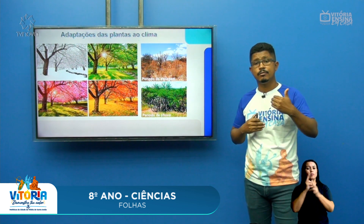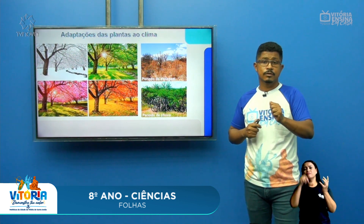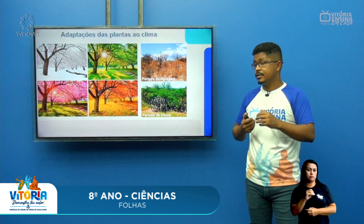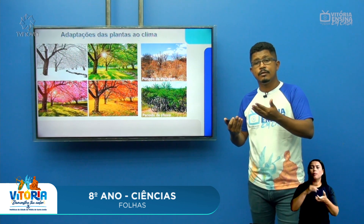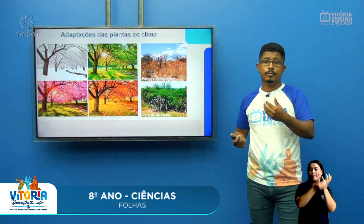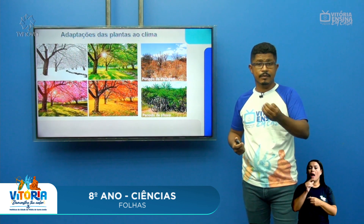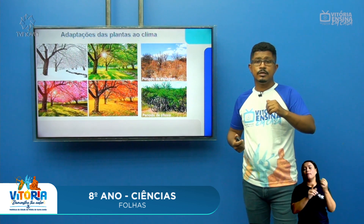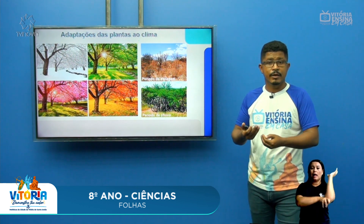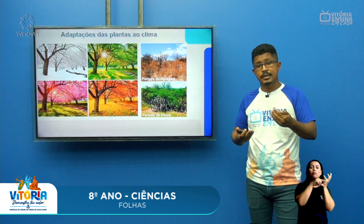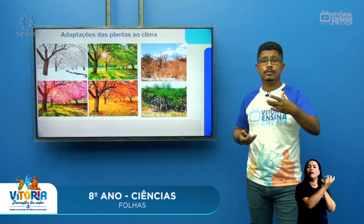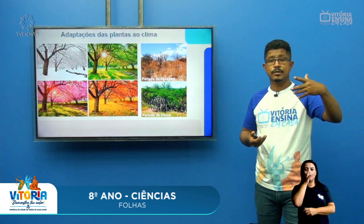Esse ciclo mostra como as plantas se adaptam ao clima. O mesmo ocorre no semiárido, na caatinga: quando chega a época da estiagem, as plantas perdem as suas folhas, pois com elas perderiam muita água e morreriam facilmente. A planta solta as suas folhas para perder menos água, já que a chuva demorará para chegar. Ela armazena energia nas suas raízes profundas e água também. Assim que a época da chuva chega, ela rebrota essas folhas rapidamente e emite flores para se reproduzir.